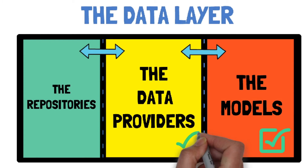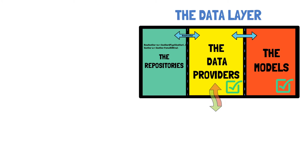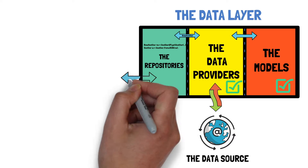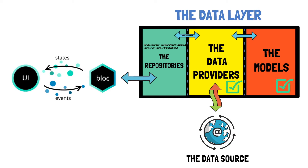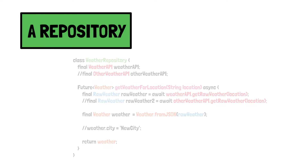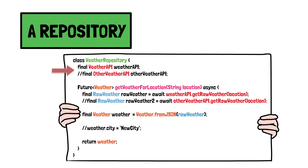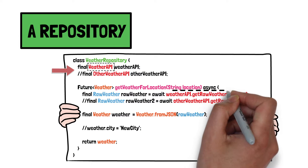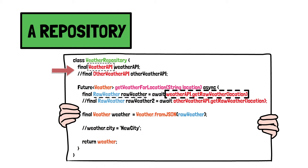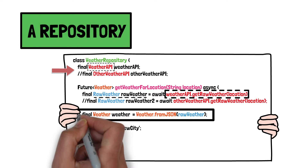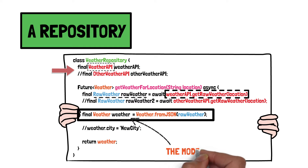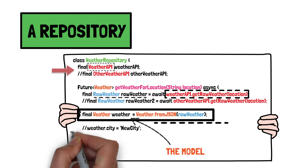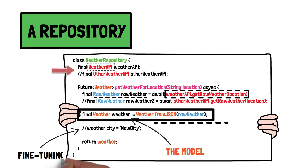The component in which model classes will be instantiated as objects is the repository. The repository is mainly a wrapper around one or more data providers. It is the part of the data layer that block communicates with. Repositories are classes which contain dependencies of their respective data providers. So the weather repository will have a dependency on the weather provider, with the help of which we'll call the get raw weather method and retrieve the raw weather data. The repository is where the model object will be instantiated with the raw data from the data provider, or parsed to model data with from-JSON methods. The repository is also a perfect place for fine-tuning the data before giving it as a response to the block — you can filter it, sort it, and do all kinds of last-moment changes before it is sent to the business logic layer.